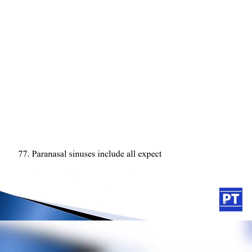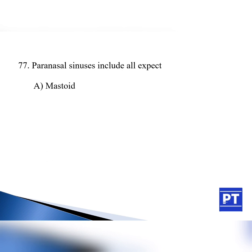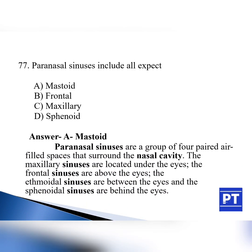Question number 77: Paranasal sinuses include all except — option A: mastoid, option B: frontal, option C: maxillary, option D: sphenoid. The answer is option A, mastoid. Paranasal sinuses are a group of four paired air-filled spaces that surround the nasal cavity. The maxillary sinuses are located under the eyes, frontal sinuses are above the eyes, ethmoid sinuses are between the eyes, and sphenoid sinuses are behind the eyes. When a patient suffers from sinusitis, these air-filled spaces will be filled with fluid during a cold and the patient will have severe headache. From the above options, mastoid is not a paranasal sinus.